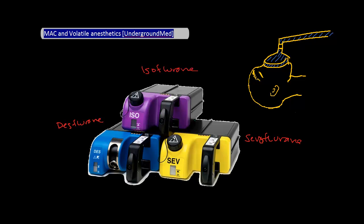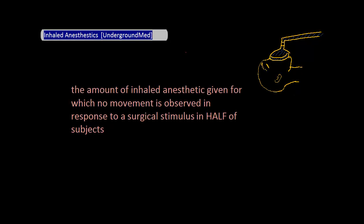Before we get into the volatile anesthetics, it is first important to discuss the definition of MAC. You might hear the word MAC thrown about the ORs, or even better, will likely be asked about it. MAC itself stands for Minimum Alveolar Concentration, and is defined as the amount of inhaled anesthetic given for which no movement is observed in response to a surgical stimulus in half of subjects.